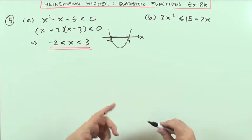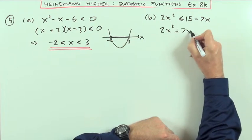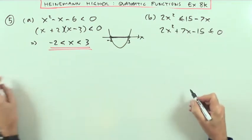And then part b, same with part b, not ready to go yet. 2x² bring it over, plus 7x minus 15 is less than or equal to 0.